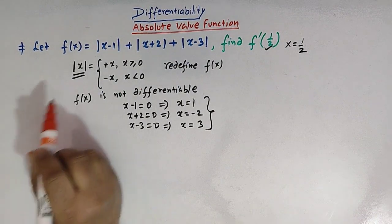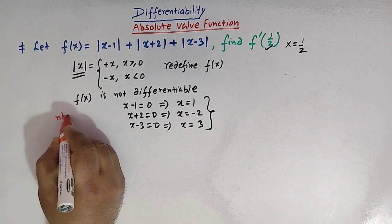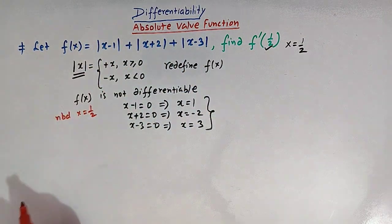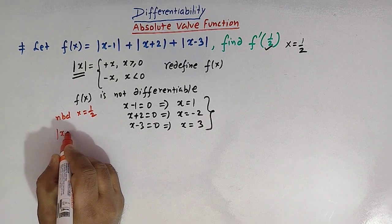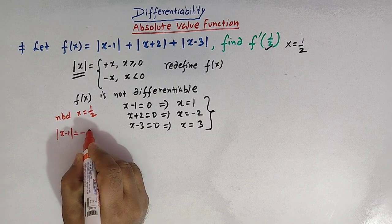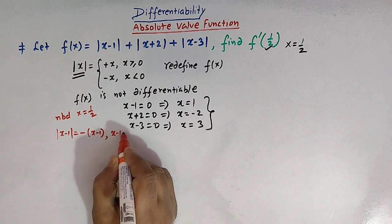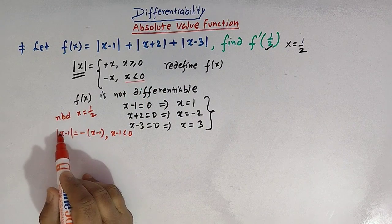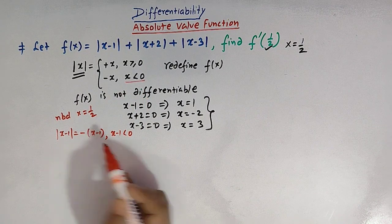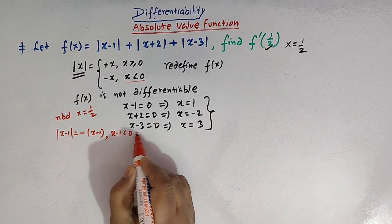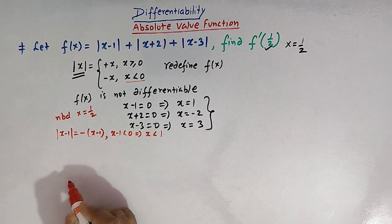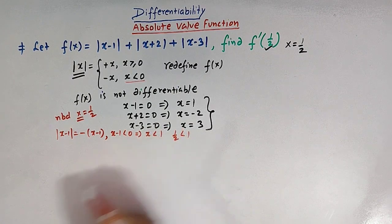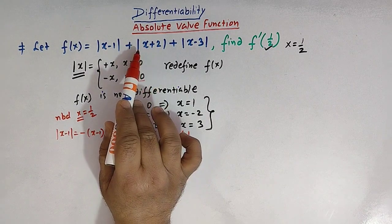Now let us define f of x in the neighborhood of x equal to half, taking each of the three terms one by one. Mod of x minus one equals negative of x minus one whenever x minus one is less than zero, which implies x is less than one. Since x equals half and half is less than one, this applies here.